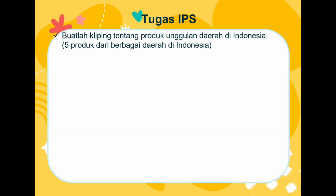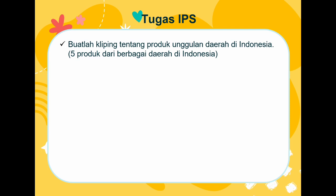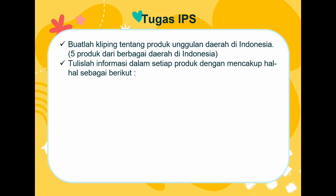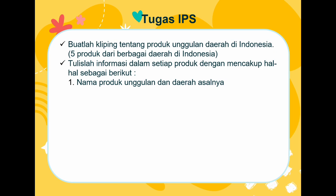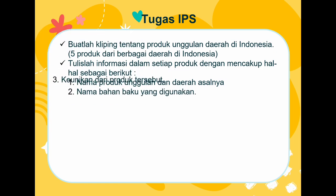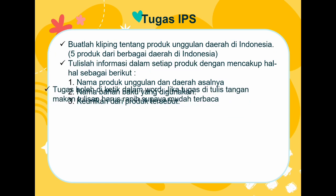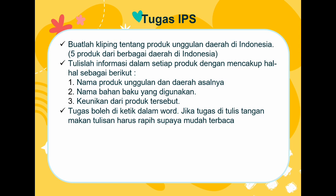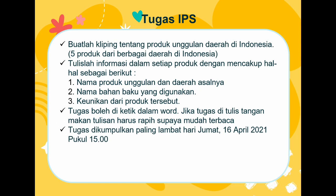Tugas IPS kali ini adalah membuat kliping tentang produk keunggulan daerah di Indonesia. Carilah 5 produk dari berbagai daerah di Indonesia melalui internet, surat kabar, atau yang lainnya. Produk tersebut bisa berupa pakaian, sepatu, makanan, atau yang lain. Tulislah informasi setiap produk mencakup: nama produk keunggulan dan daerah asalnya, nama bahan baku yang digunakan, dan keunikan dari produk tersebut. Tugas boleh diketik dalam Word; jika ditulis tangan, tulisan harus rapi. Tugas dikumpulkan paling lambat hari Jumat, 16 April 2021 pukul 15.00.